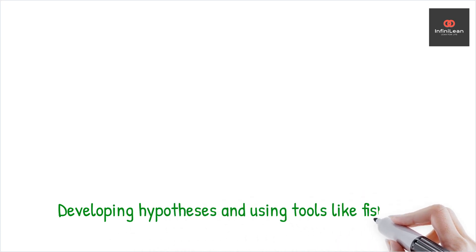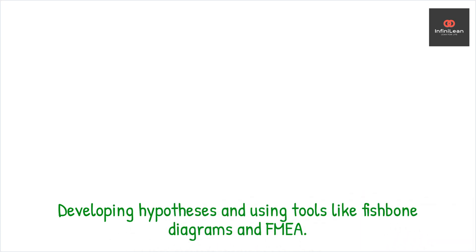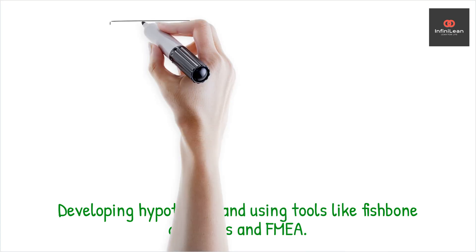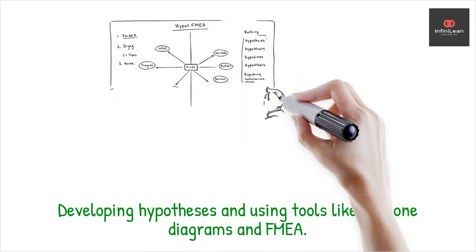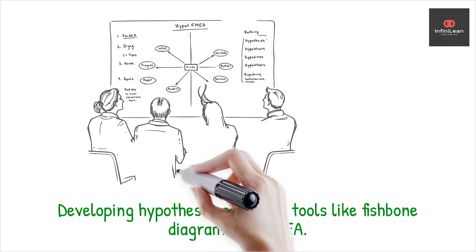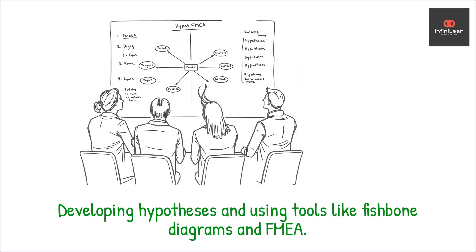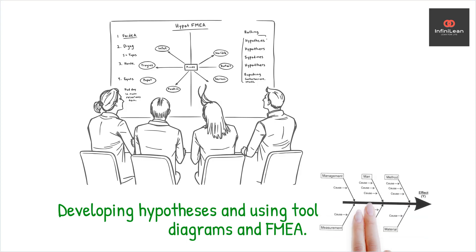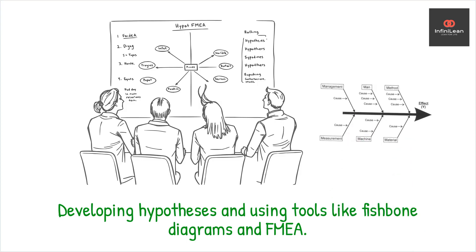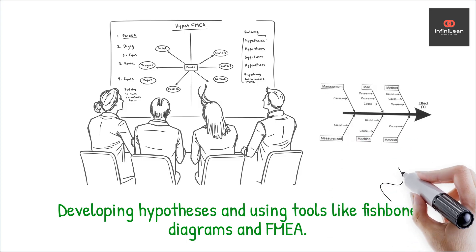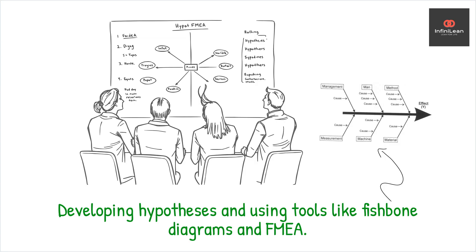We begin with hypothesis development. By generating theories about potential causes, we pave the way for data-driven validation. Tools like fishbone diagrams, also called cause and effect diagrams, and failure mode and effects analysis, FMEA, are instrumental in mapping out possibilities.